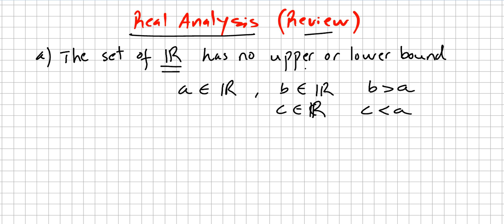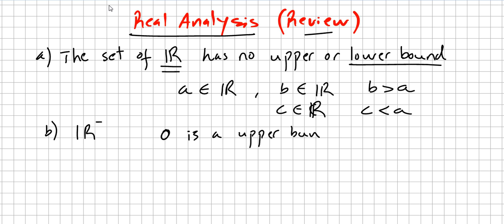So the set of real numbers has no upper bound or lower bound. What about the negative real numbers? For all strictly negative real numbers, you have no lower bound, but you do have an upper bound — for instance, zero is an upper bound. In fact, any positive number is an upper bound for the negative reals.